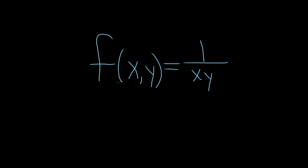In this problem, we have a function of two variables, f of x, y equals 1 over x, y, and we're trying to find the domain. The domain is the set of all ordered pairs that we can plug into this function that makes sense. The only time this function will not make sense is if we have something like 1 over 0. So x times y cannot be equal to 0.